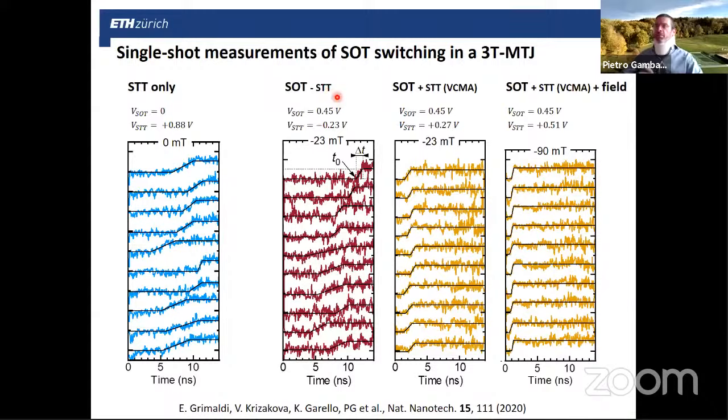Also with an incubation time with a very large spread of possible incubation times. Then we move on to the SOT switching. Now, in order to measure the TMR during a pulse, we need to inject a small STT pulse as well. We need to have a current running through the junction in order to measure the resistance of the junction. But we can control the amount of current. So in this first case, we keep it low, and moreover, we keep it in a direction that actually hinders SOT switching. That's why we write SOT minus STT. What we see is that here, again, the junction switches.